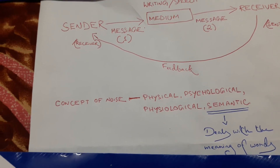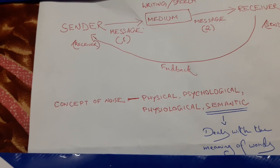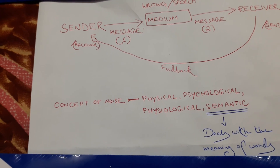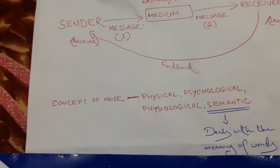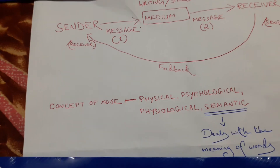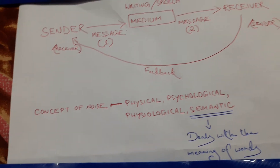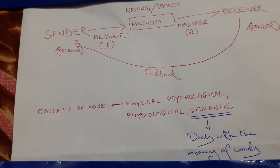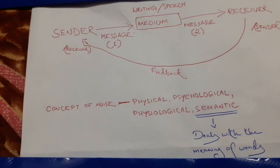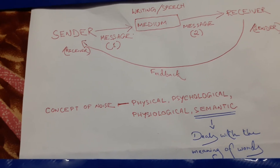Physical noise talks about distractions that may cause disruptions in receiving the information. Background music, loud perfume, even someone's attire can be regarded as examples of physical noise.